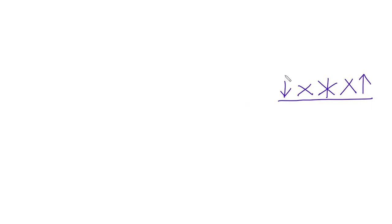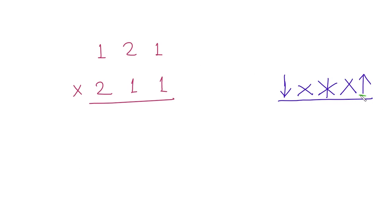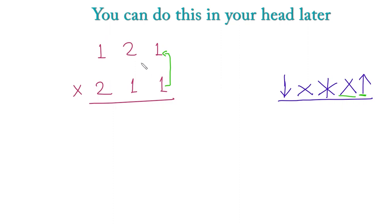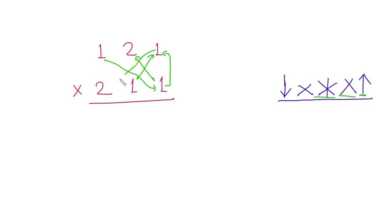Now suppose we take an example like 121 multiplied by 211. We have an up arrow, which means first we multiply this number by this number. Then we multiply this by this and this by this. Then this by this, this by this, and this by this. Then this by this and this by this. Finally a down arrow, the last one, which means we multiply this number by this number.